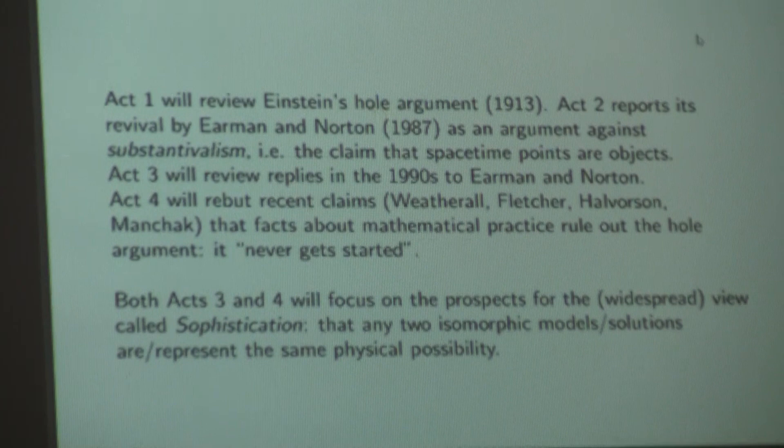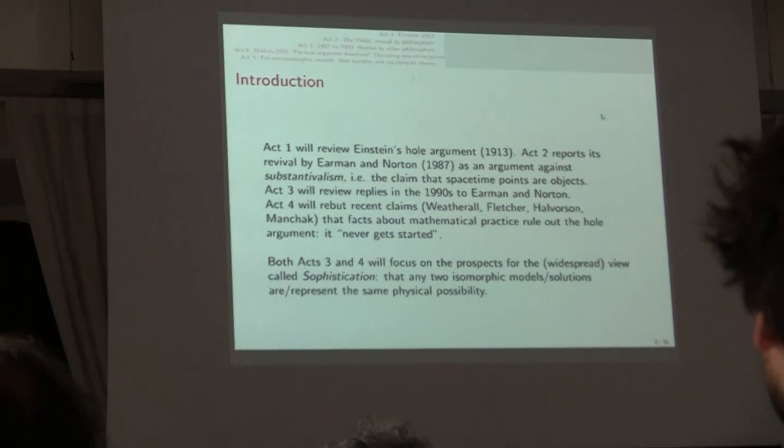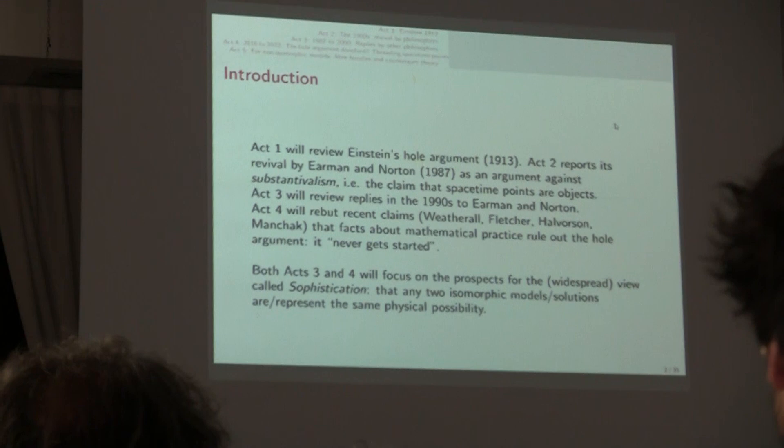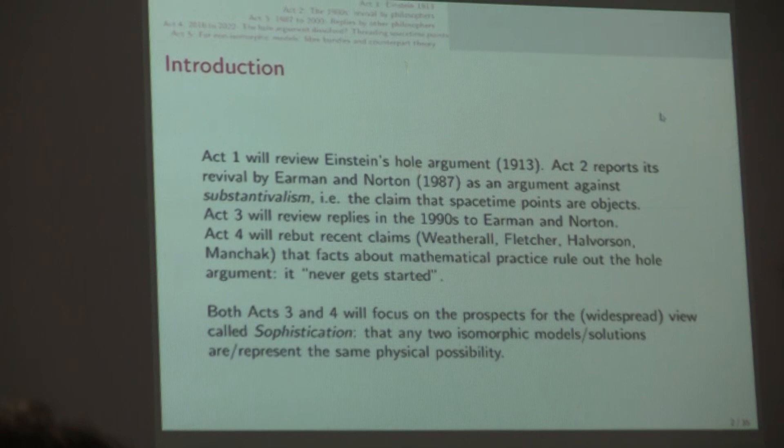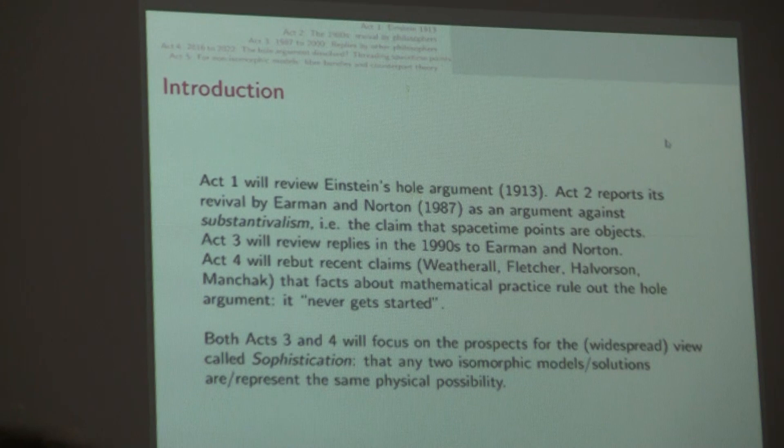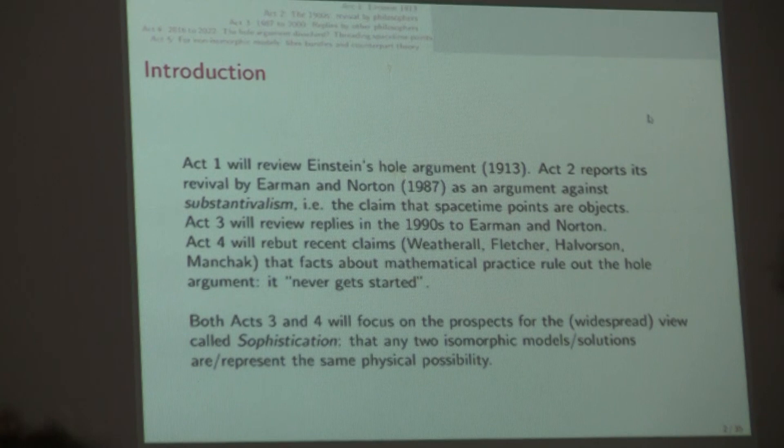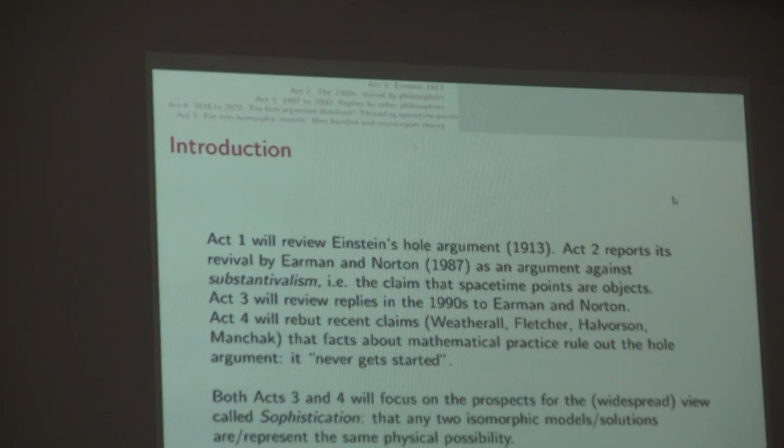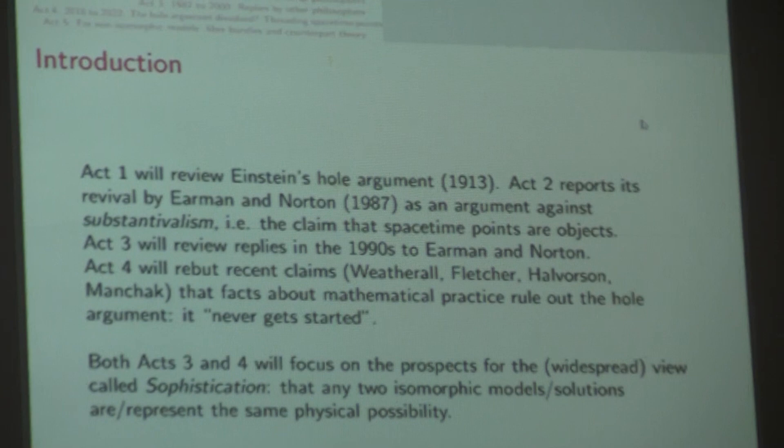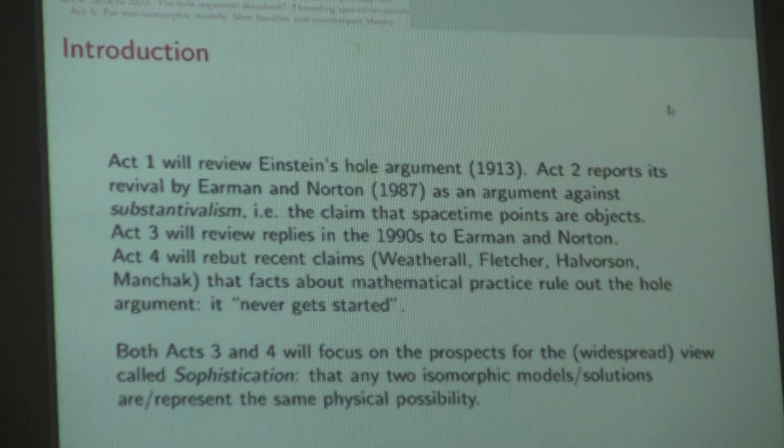So first I'll tell you about Einstein. Then in Act 2 I'll talk about John Earman and John Norton, famous philosophers. Norton, also a historian, who in 1987 used the argument against a philosophical doctrine. The idea is spacetime points are objects. In Act 3 we're going to review replies in the 1990s.